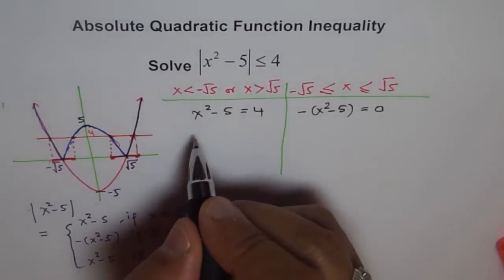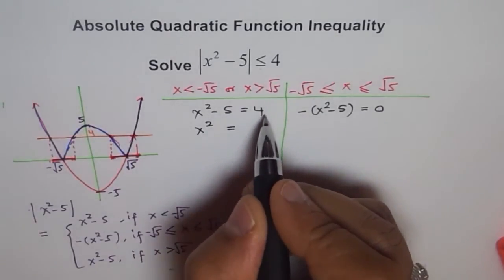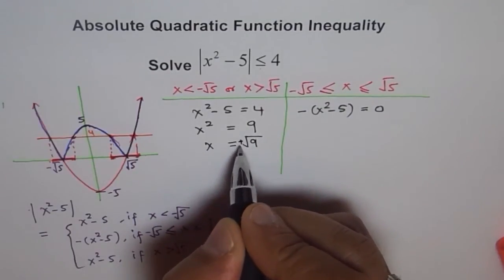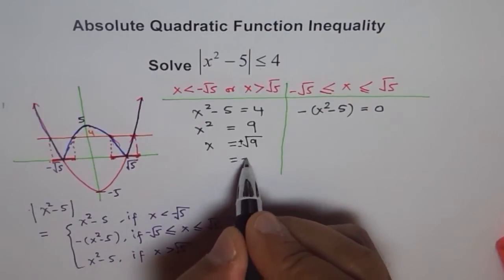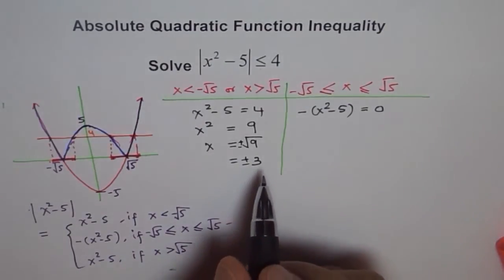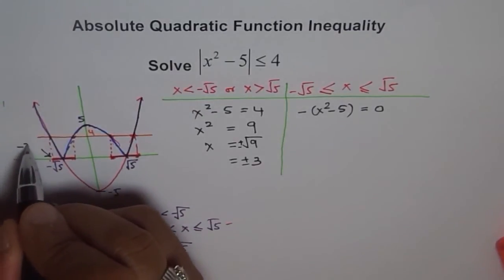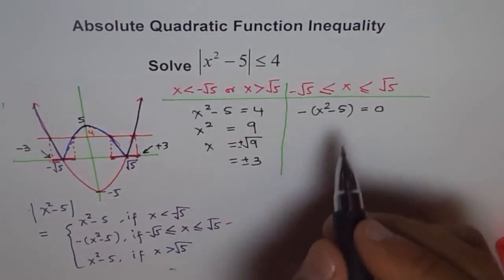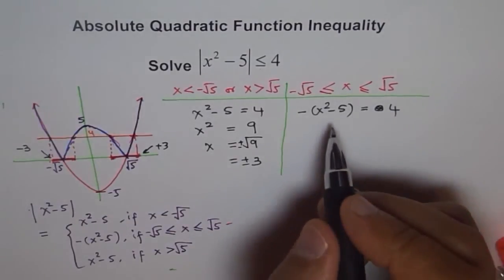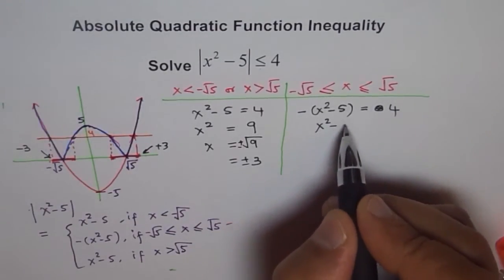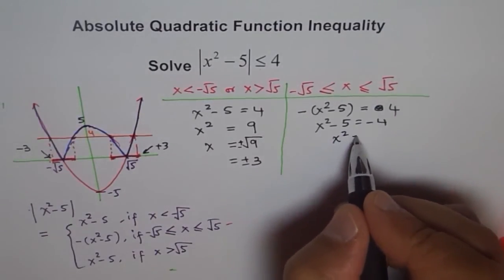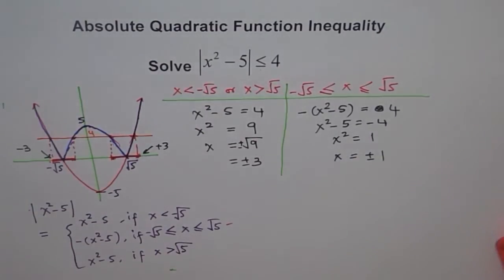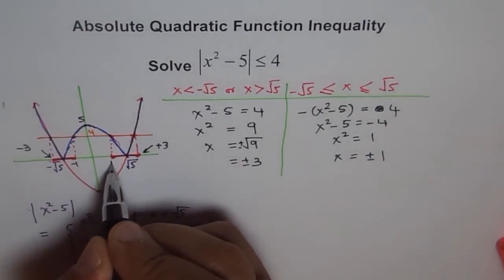For the first case, x² - 5 = 4 gives x² = 9, so x = ±3. These are the outer intersection points. For the second case, -(x² - 5) = 4, which means x² - 5 = -4, so x² = 1, giving x = ±1. So the four key points are -3, -1, +1, and +3.